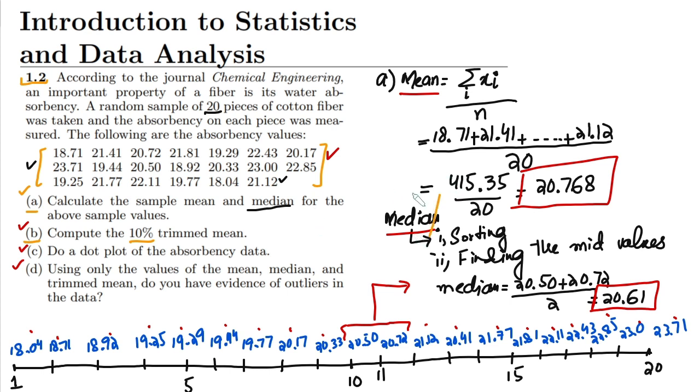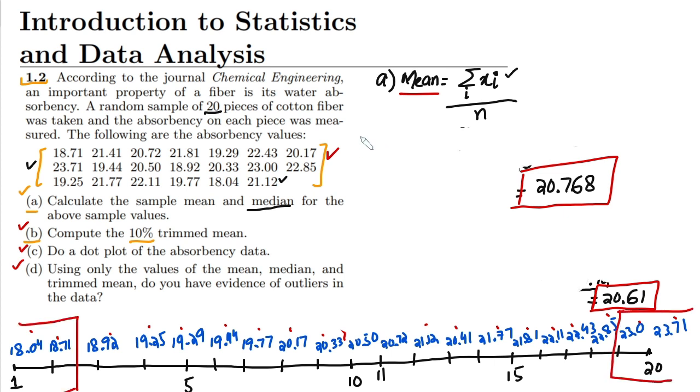Let me remove the previously studied mean and medians. I'll use the name mean underscore TR for the trimmed mean. Here we have to add all the data points which are from 18.9 to 19.25 up to 22.85. Let me add them: 18.92 plus 19.25.